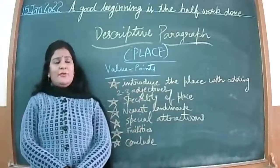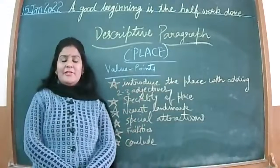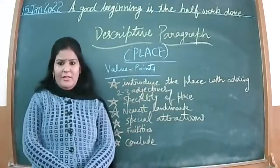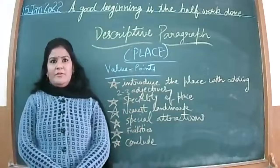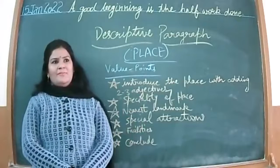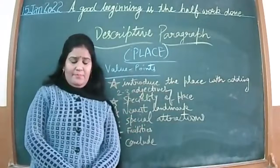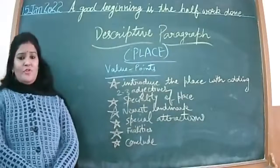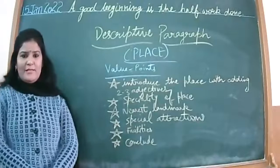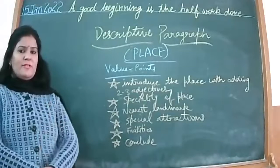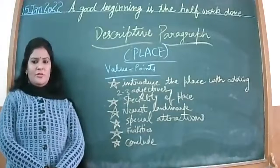For example, you can start by telling where it is located - like 'foothills of Himalayas', or you can say 'snow covered' or 'snow clad mountains'. So you need to add adjectives into the beginning line. Please note down the value points. I can ask you to check your notebooks - you will switch on the cameras and show me your notebooks.